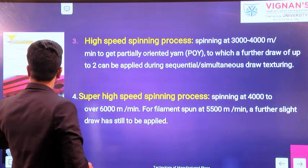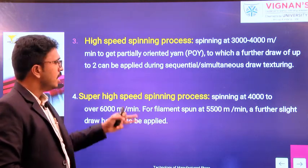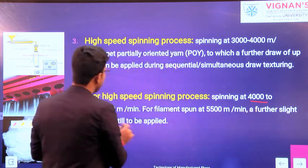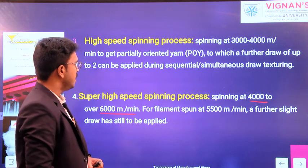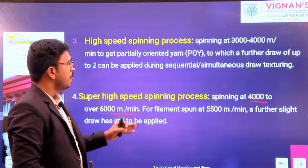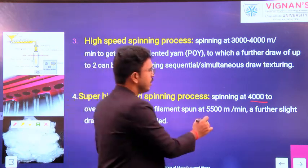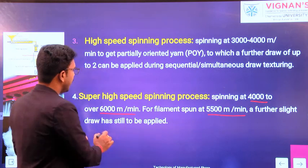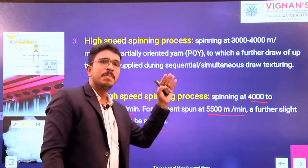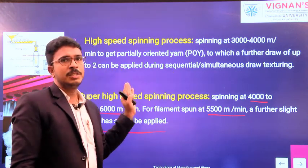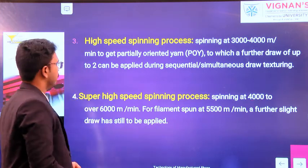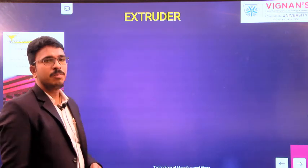When it comes to super high speed spinning process, the spinning speeds are at four thousand to six thousand meters per minute. The filaments spun at five thousand five hundred meters per minute — a further slight draw still has to be applied. Even though we are maintaining these spinning speeds, a further drawing is required to get complete orientation. This is super high speed spinning.